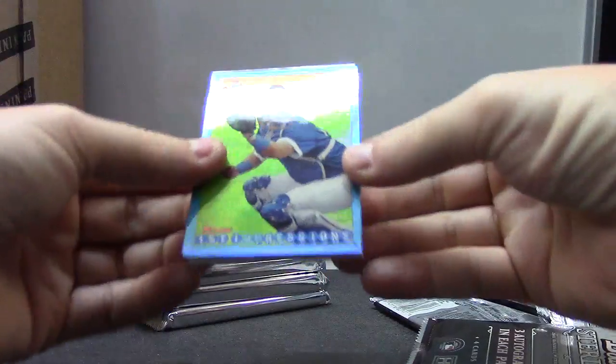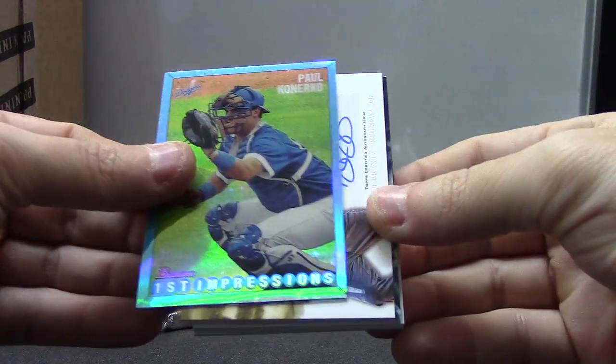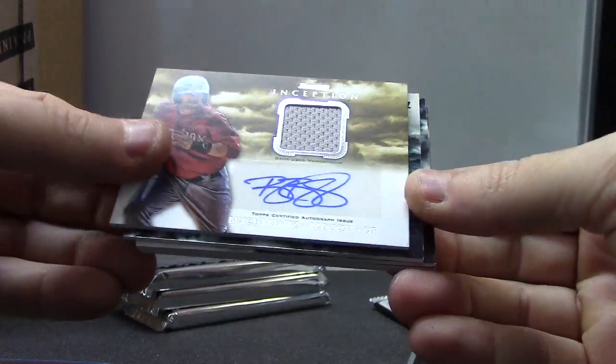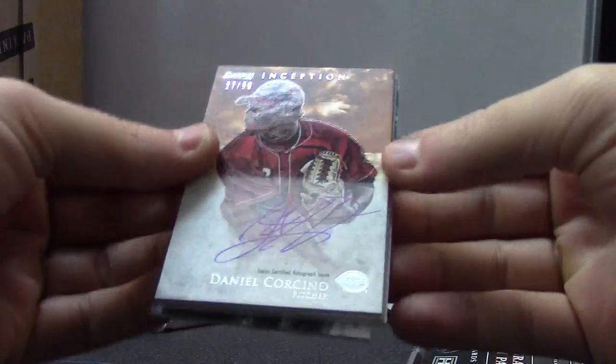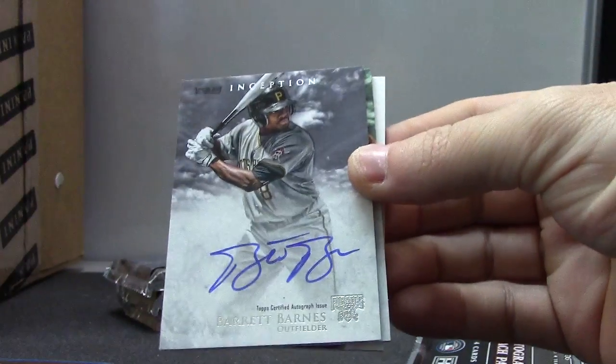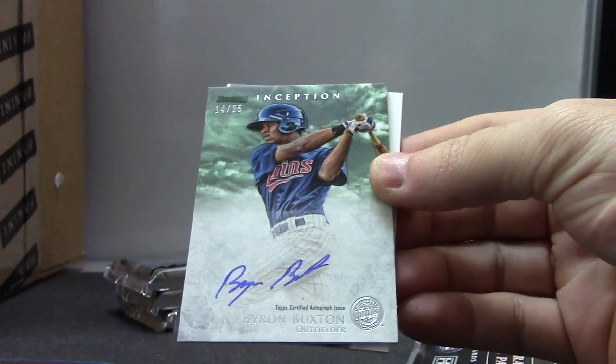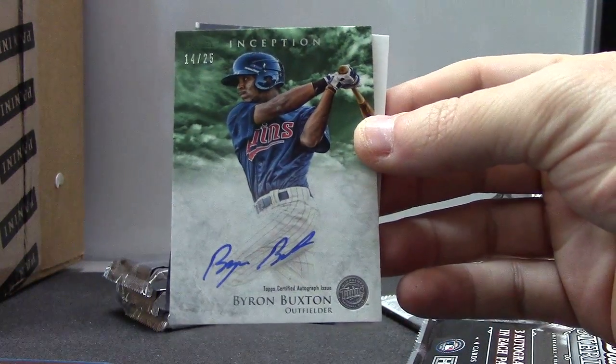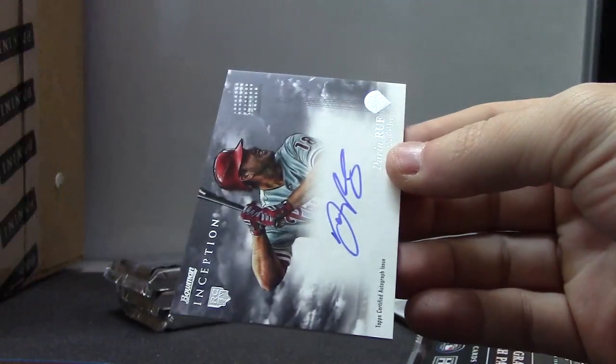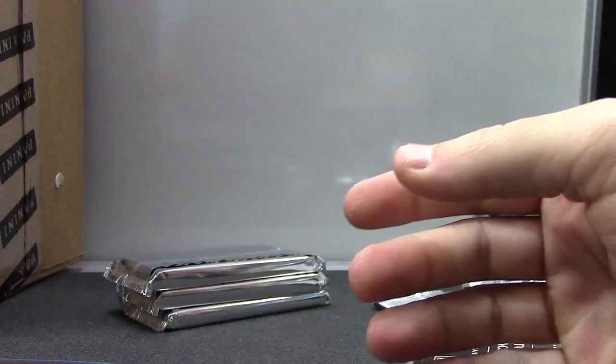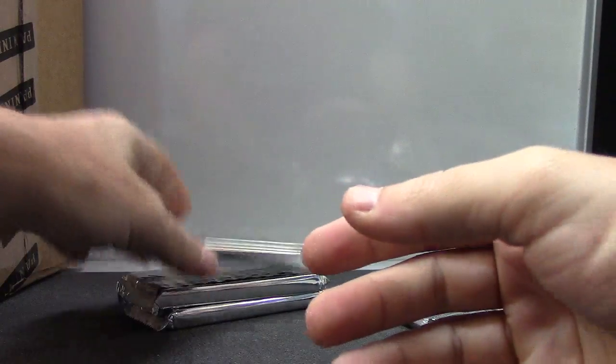All right, Paul Konerko, Bryce Brentz. Here's the autograph, number 250, Daniel Corcino. Barrett Barnes. Byron Buxton, nice one, green to 25, and Darren Ruf.